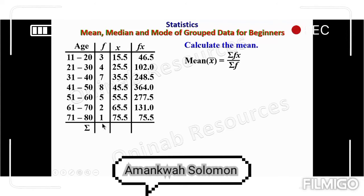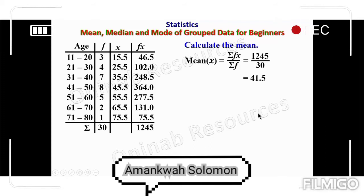We sum up the frequency column, which gives 30. Then we add the fx values, giving 1245. Substituting into the formula: summation of fx is 1245 divided by summation of f which is 30, giving us 41.5 — the mean of this distribution. We are done with the mean.